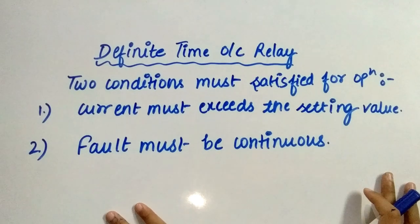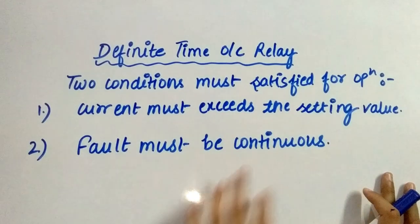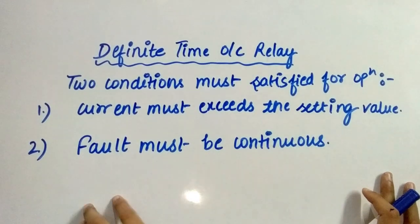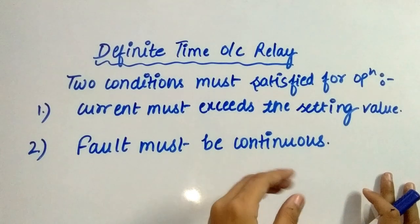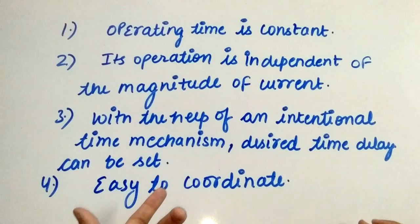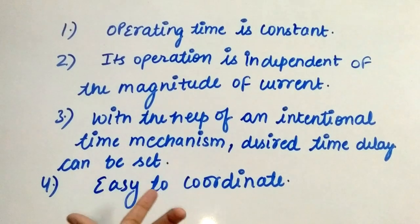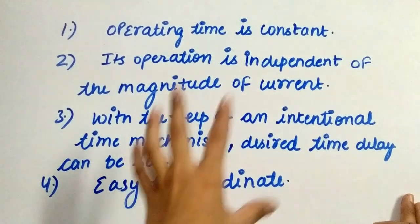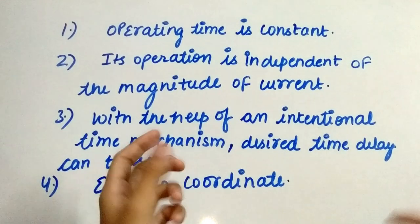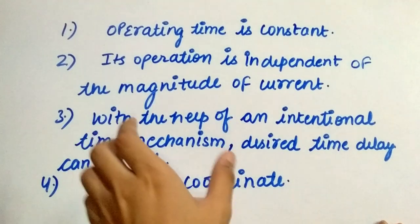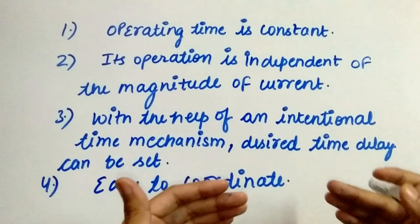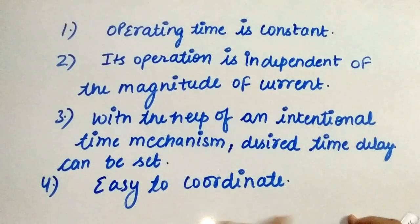In a definite time overcurrent relay, two conditions must be satisfied for operation or tripping. The first condition is that the current must exceed the setting value. The second condition is that the fault must be continuous for at least a time equal to the time setting of the relay. Modern relays contain more than one stage of protection, and each stage includes its own current and time setting. The operating time is constant and independent of the magnitude of the current above the pick-up value. There is a pick-up value and time dial settings, and the desired time delay can be set with the help of an intentional time delay mechanism. It is easy to coordinate.